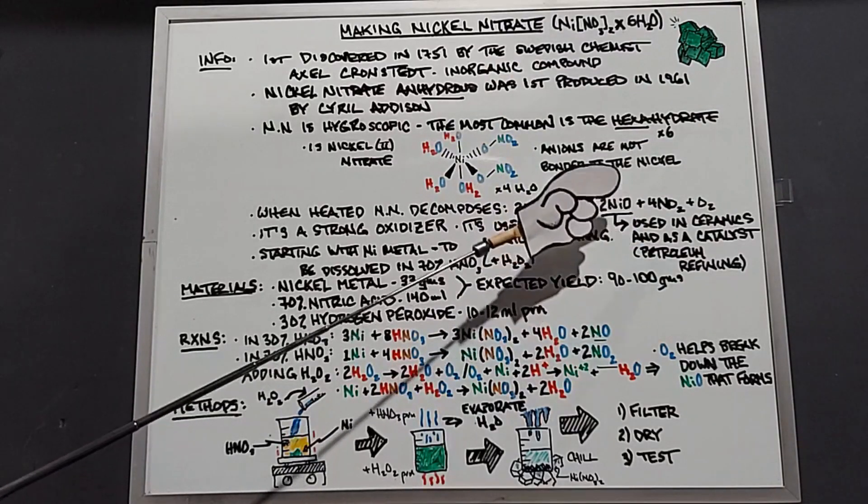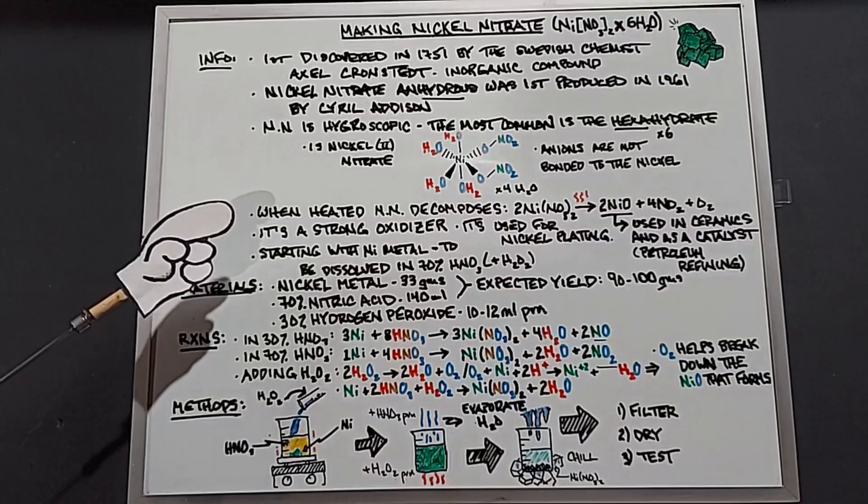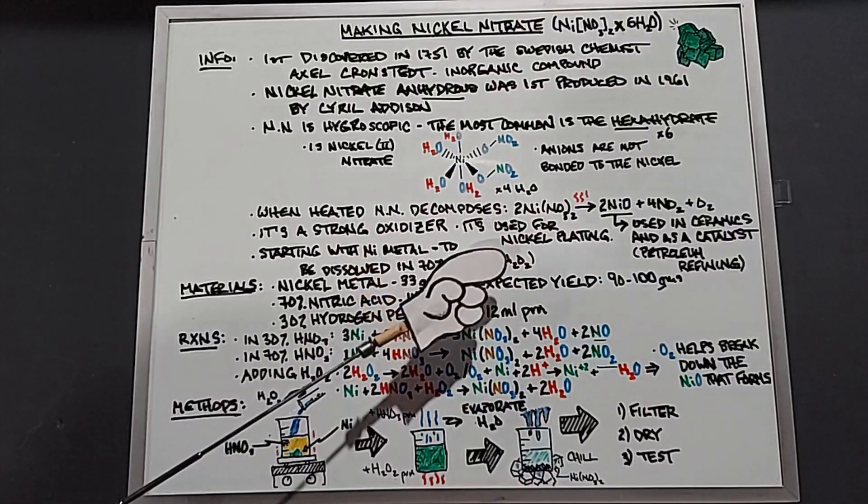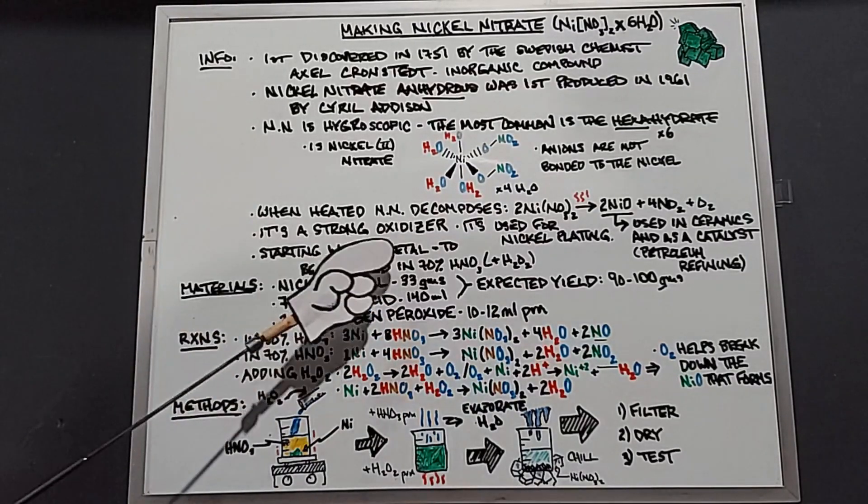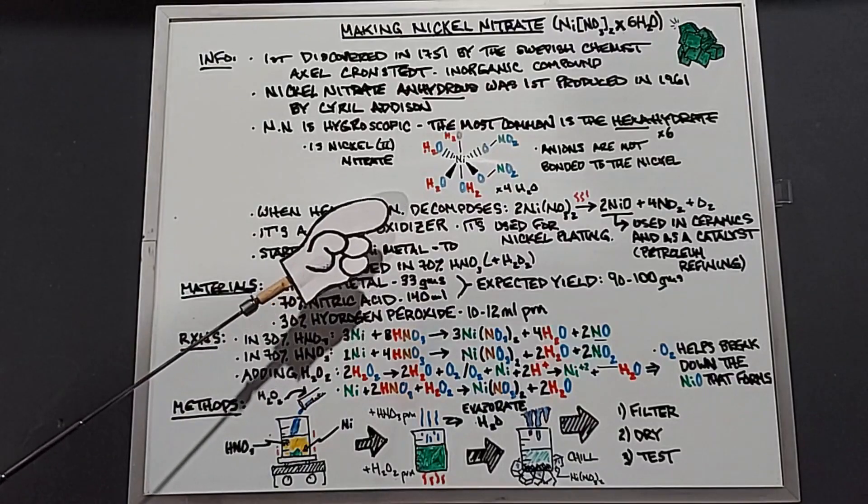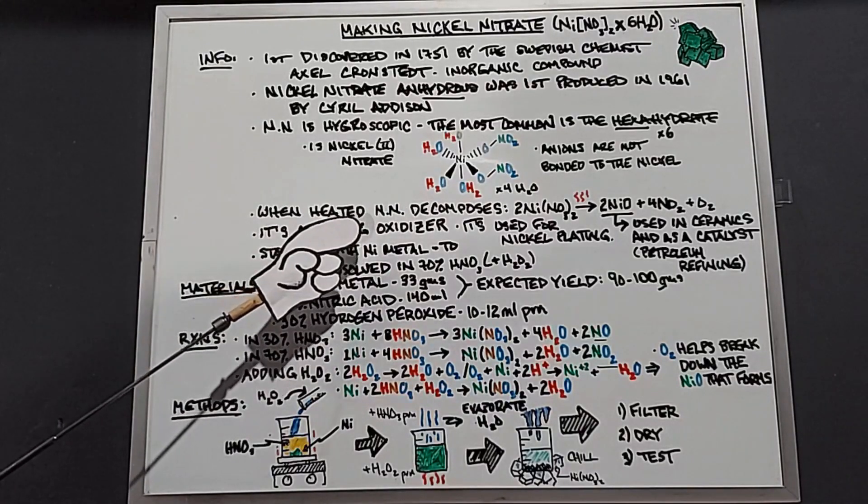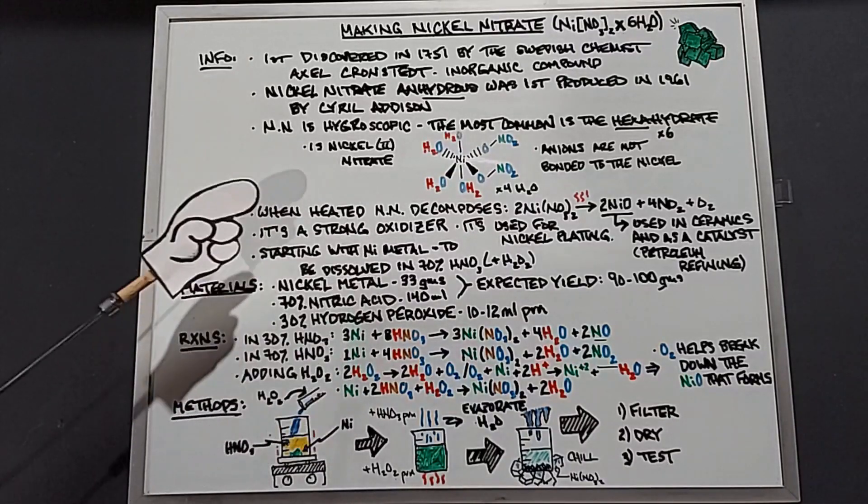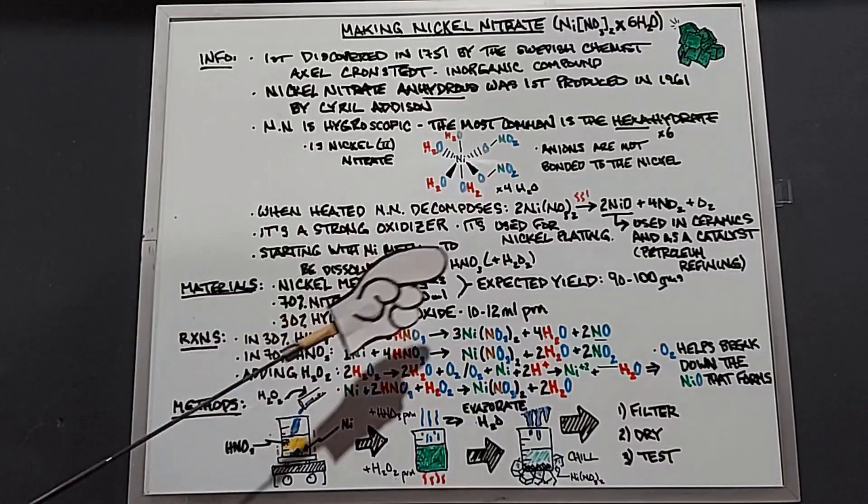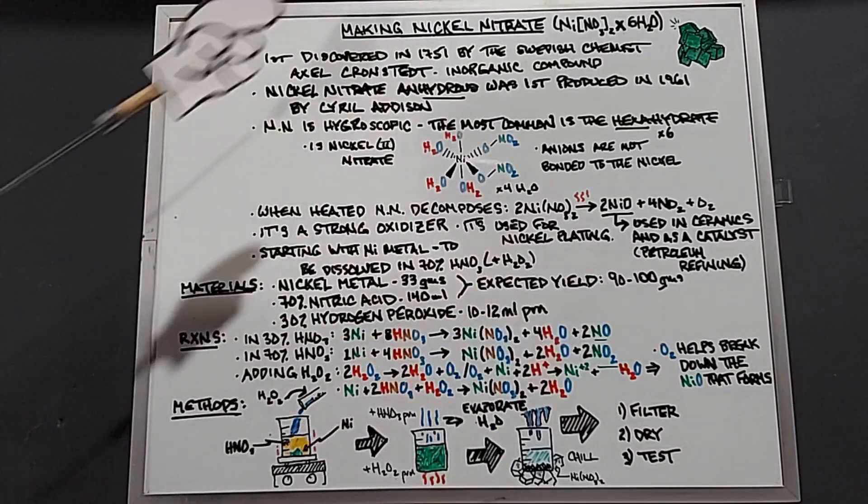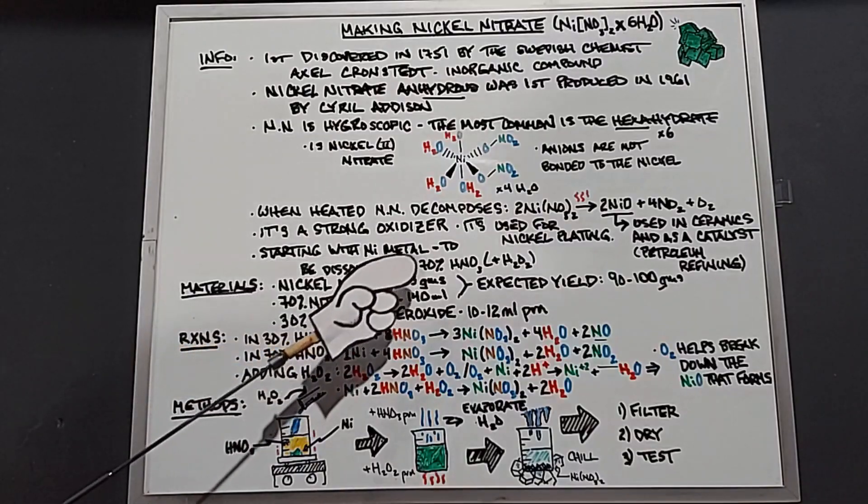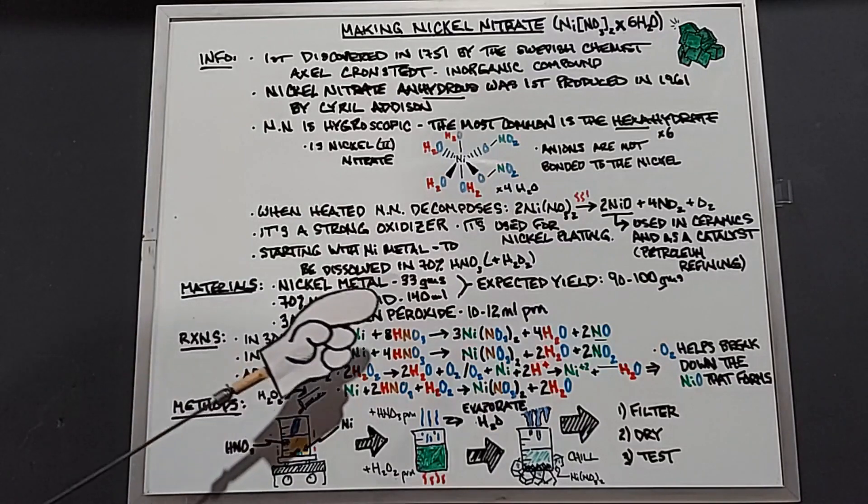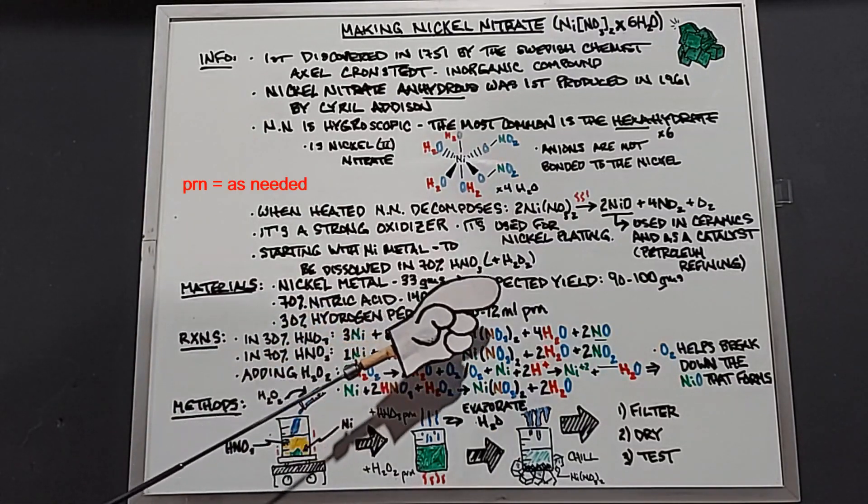As a side note, nickel oxide is used in ceramics and as a catalyst, mostly in petroleum refining. As are most nitrates, it is a strong oxidizer. It can also be dissolved in solution and used for nickel plating. In this experiment, we'll be starting with nickel metal. I'm going to be shooting for a yield of around 100 grams. To do that, I'll need 33 grams of nickel metal, 140 milliliters of 70% nitric acid, and 30% hydrogen peroxide in amounts of 10 to 12 milliliters PRN.